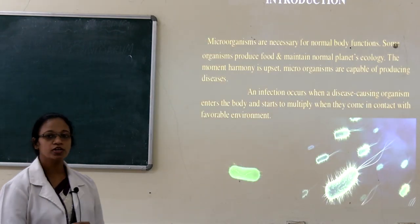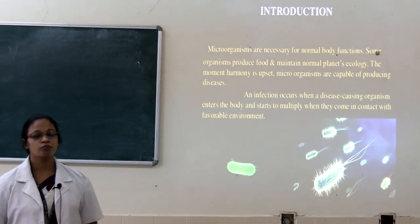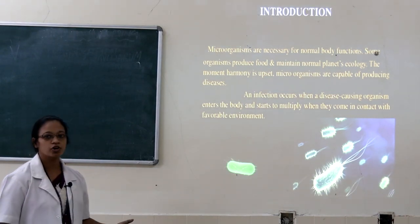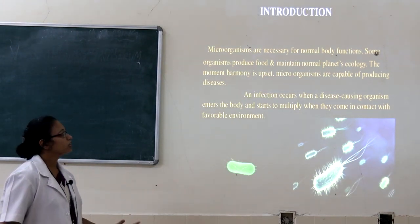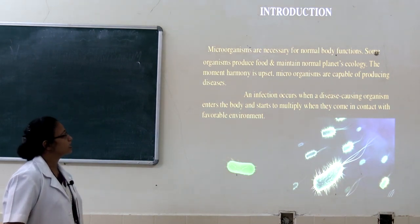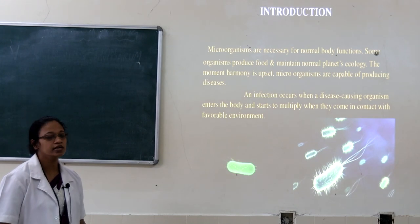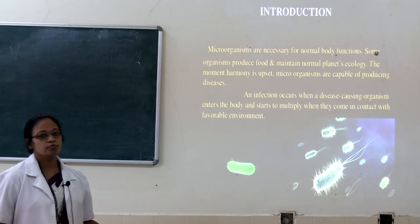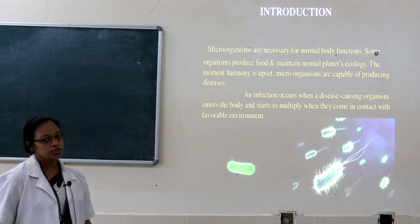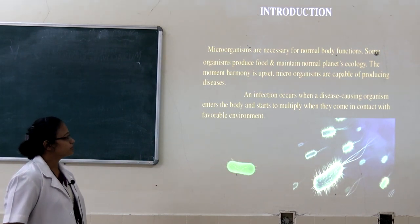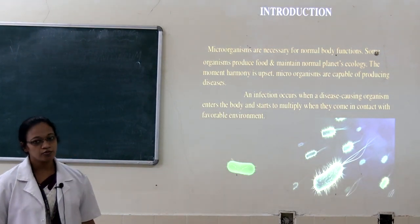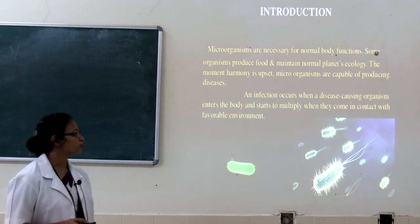Before that, we should know what infection is and what microorganisms are in and around our body. Microorganisms are necessary for our normal body functions and mechanisms. Some microorganisms produce food and maintain the normal ecosystem of our body, while some microorganisms are capable of producing diseases or illness. In simple terms, infection occurs when a disease-causing organism enters our body and starts to multiply when it comes in contact with a favorable environment.